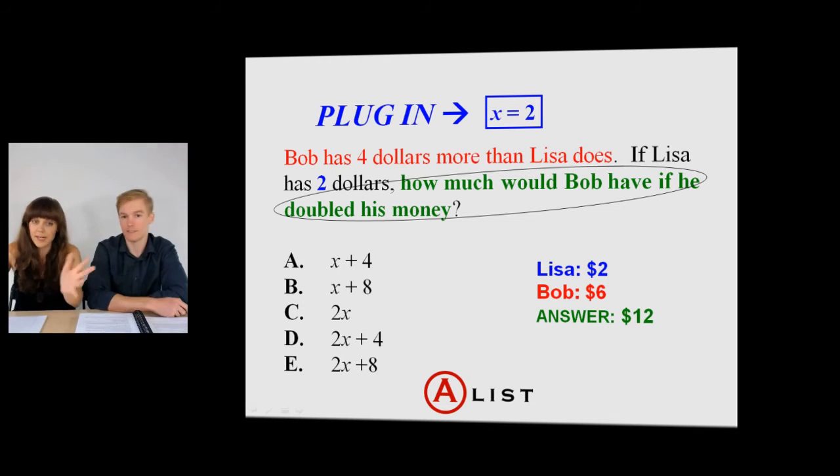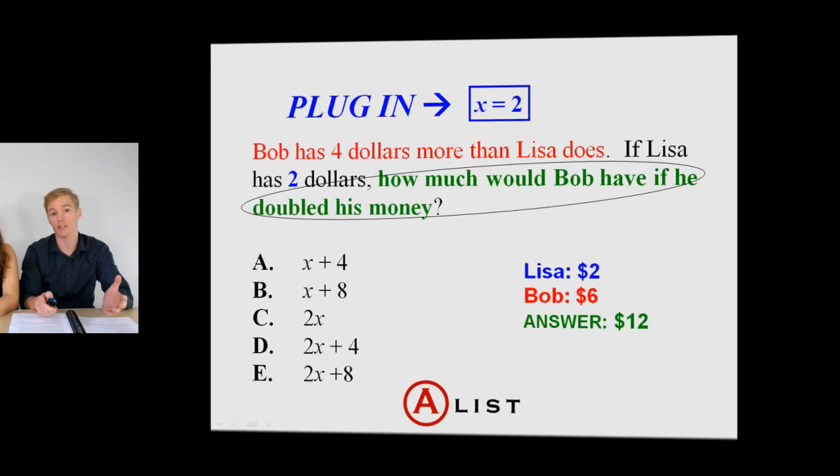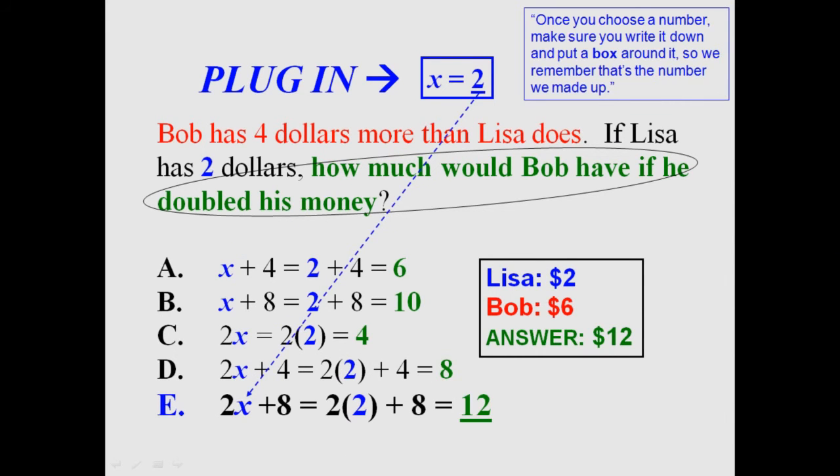They all have X's in them. What's X? Panic! Don't panic. Luckily we have an X. Again, have them have that system, so when they plug in X equals two, circle it, whatever, so it's right there they can visually see it. Right, now they can substitute it into all the answer choices. Once they put them all through, we'll see, nope, six is not twelve, ten is not twelve, blah blah blah. E is twelve, and there we go, fabulous.